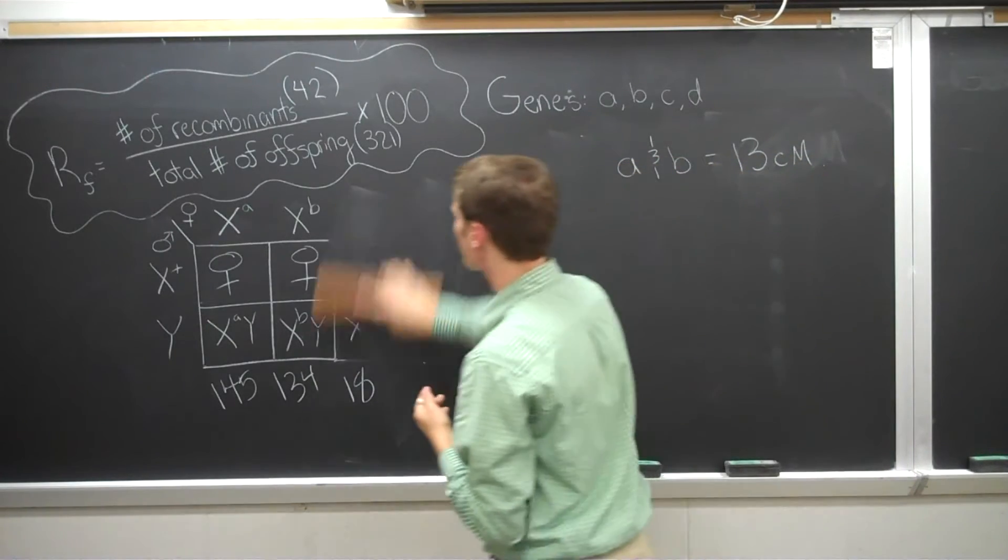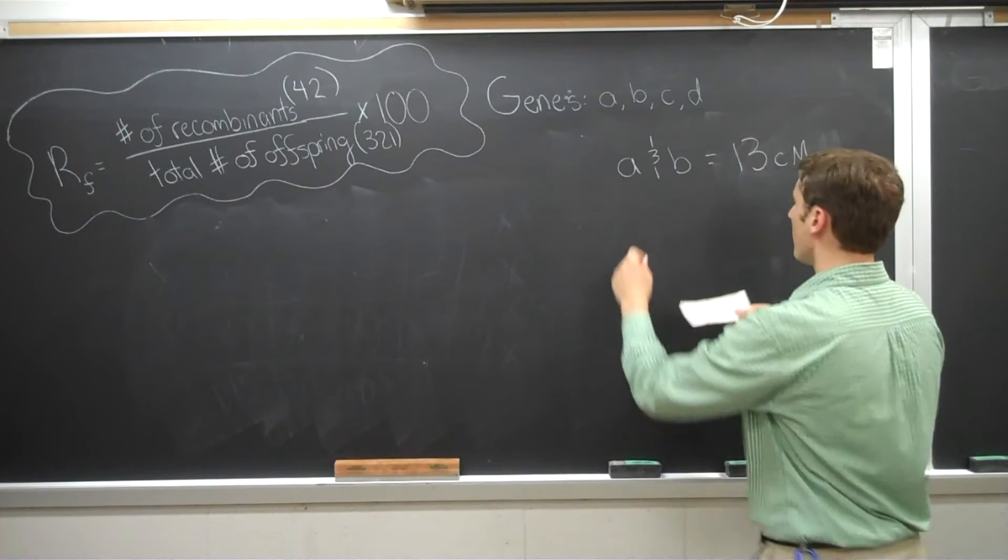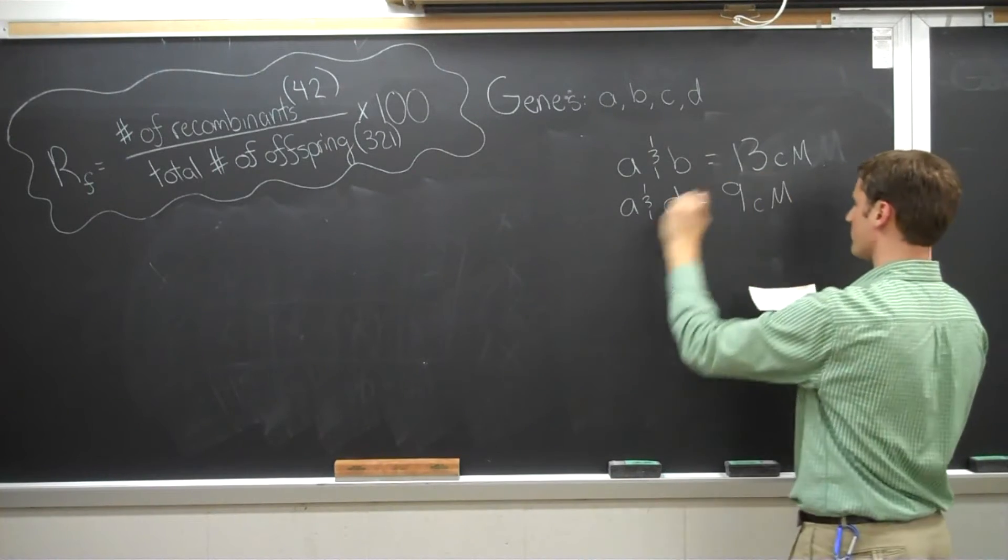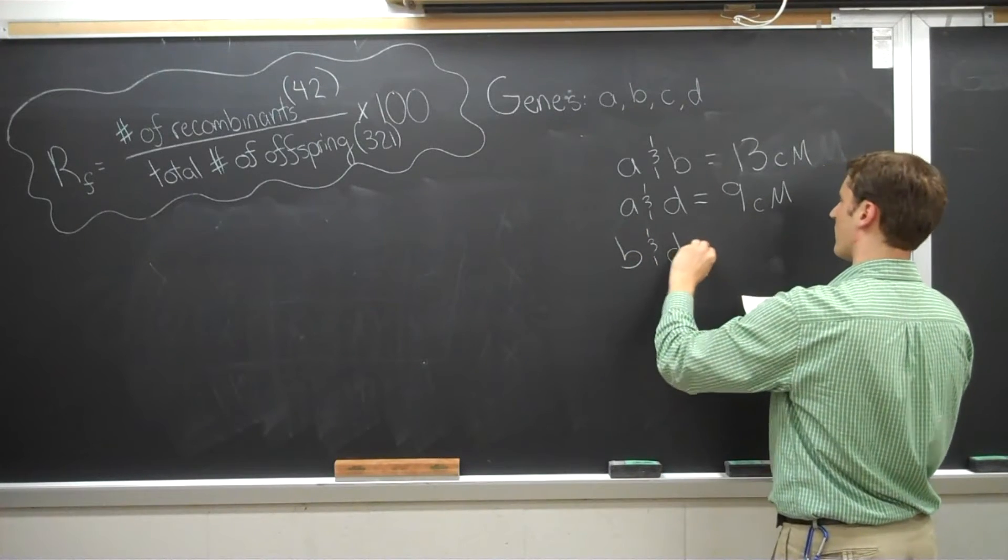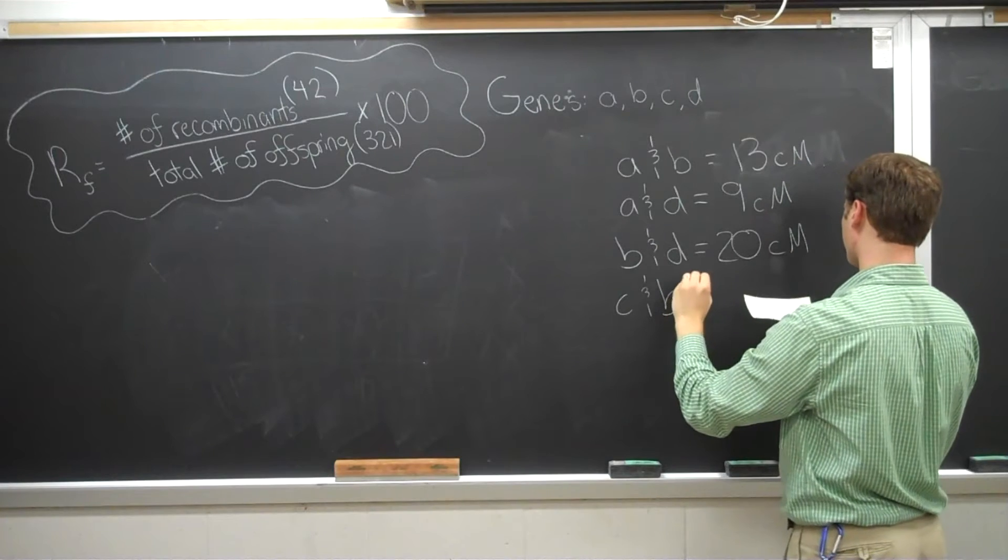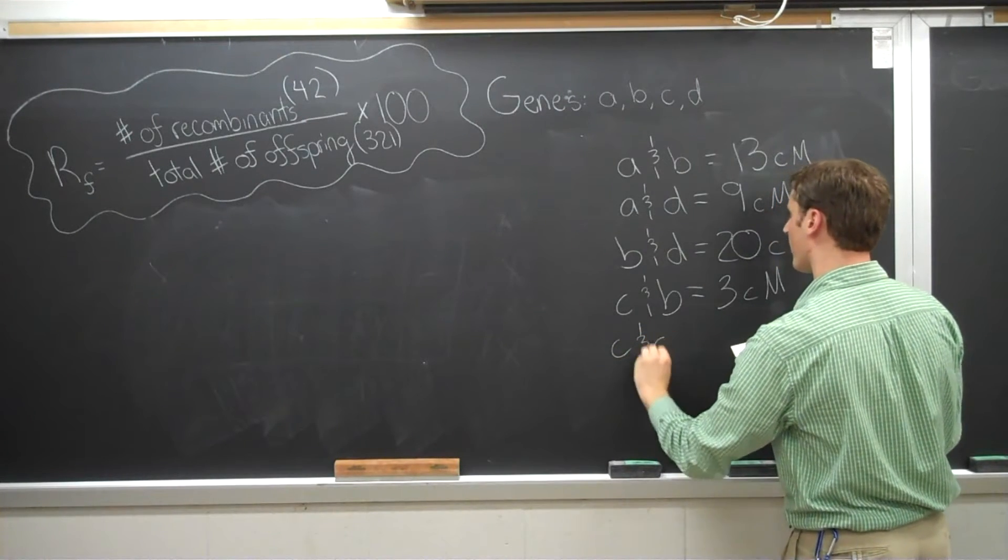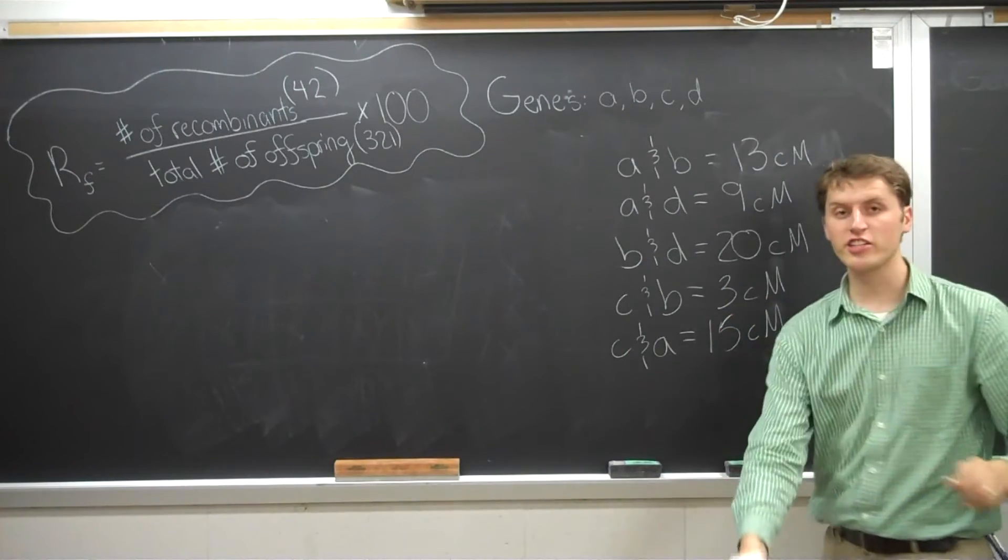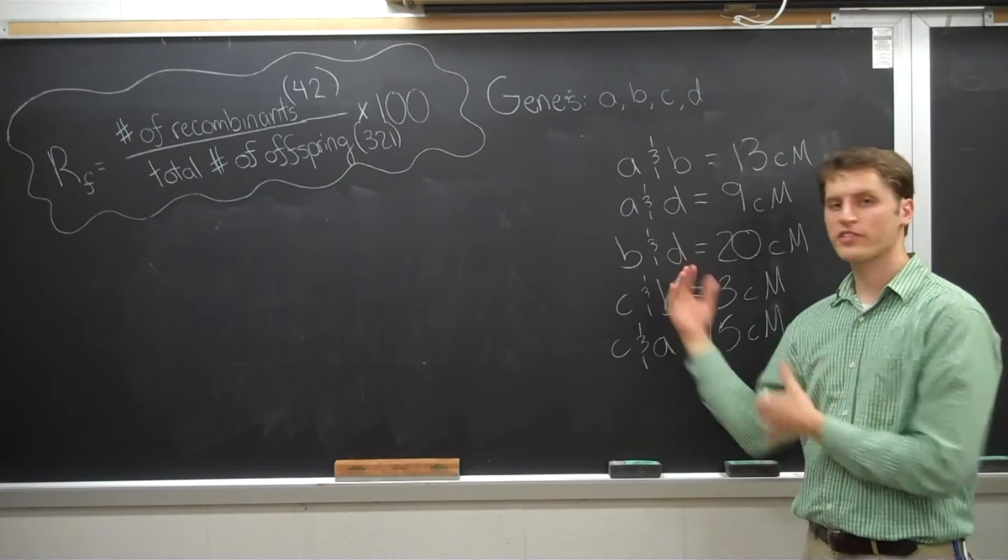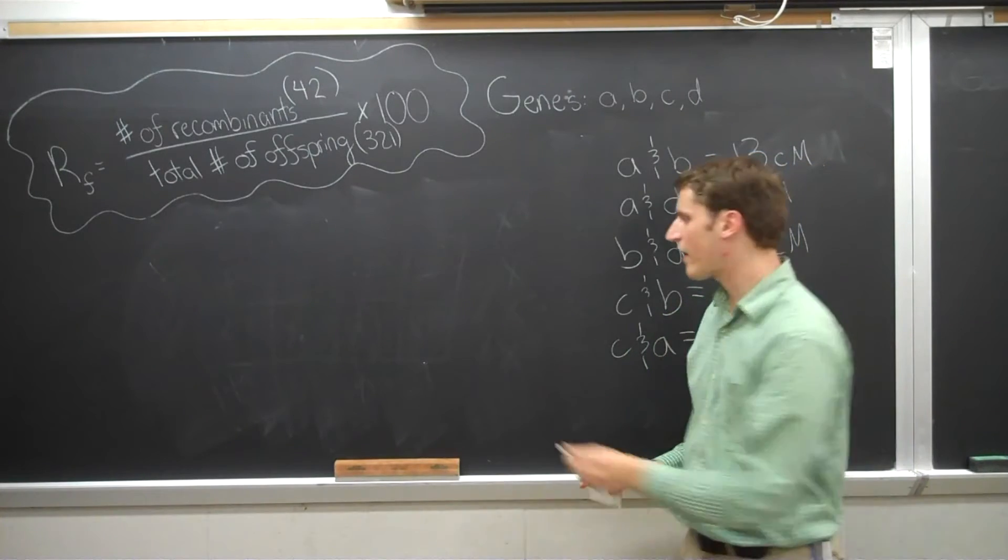I'm going to erase this now and throw up some hypothetical numbers that will allow us to build a map. So the recombination between A and D, the distance there is 9 centimorgan. Between B and D is 20 centimorgan. C and B is 3. And C and A is 15. Each of these numbers represents an entirely different cross, which you guys as students in the lab, you generated data from five separate crosses just like this. So how do we figure out where these are located in relation to each other? We can't find out their exact location, but we can find out how they are related to each other.